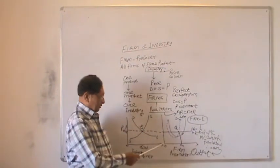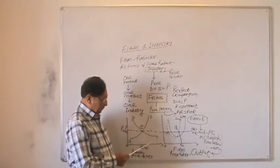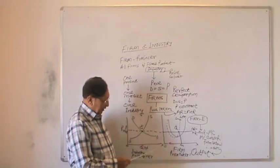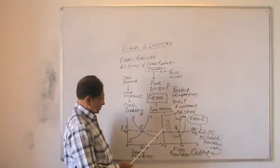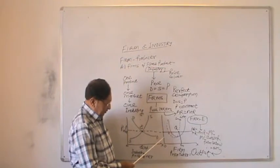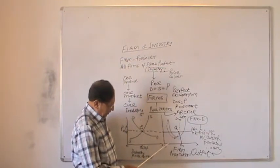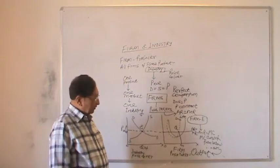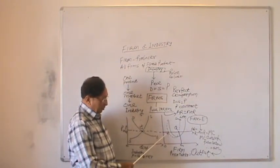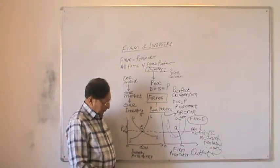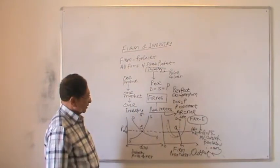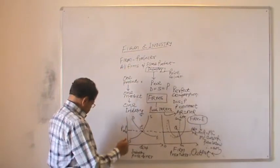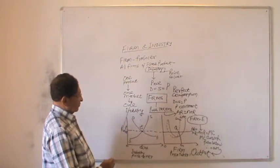Now, why should marginal cost cut from below? Because at the other intersection point it is cutting from above, and if we stop production there, capacity utilization will be zero. Here we are still in the process of decreasing cost by optimum utilization of resources. That is why this point will not be equilibrium where marginal cost cuts marginal revenue from above, because that will be too meagre an output for a firm, and at this stage cost will be very high. This is how we have equilibrium of firm as well as industry.